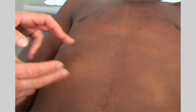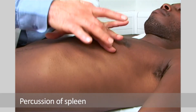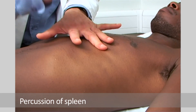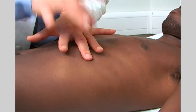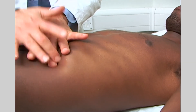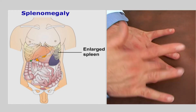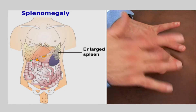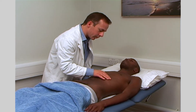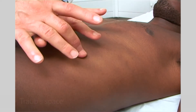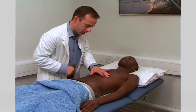The spleen is percussed in a similar fashion, remembering that when it enlarges it projects down towards the umbilical level. Percuss at the ninth intercostal space on the right, known as Traube's space — it is just in front of the anterior axillary line. It is normally tympanic unless the spleen is enlarged.